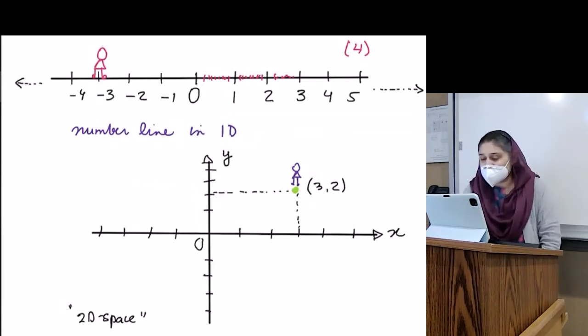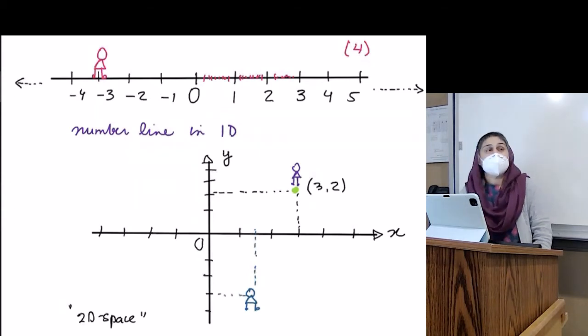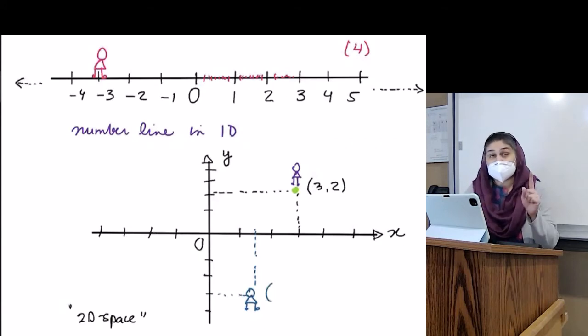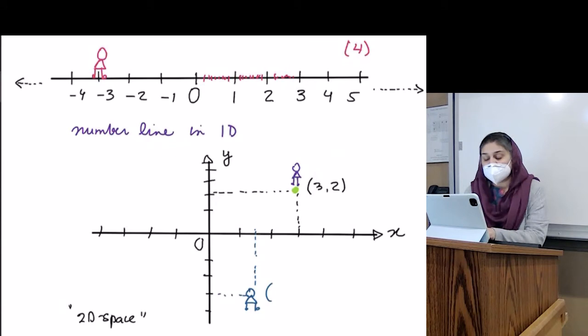Now, what if we move this person? Another person to here. Oh, he's in between the two points. What will this person's coordinates be? Remember, we have to start with what first? X. So this person's coordinates are 1.5 and negative 3.